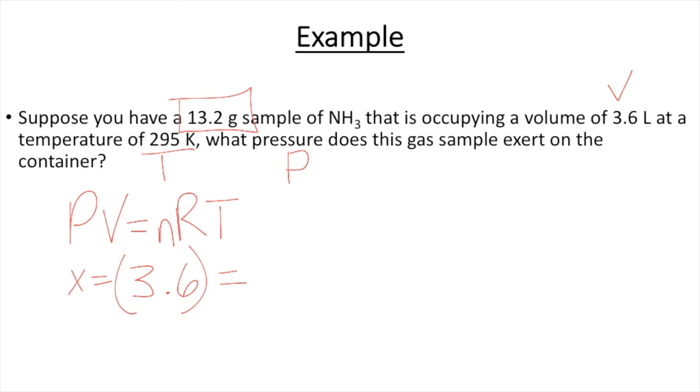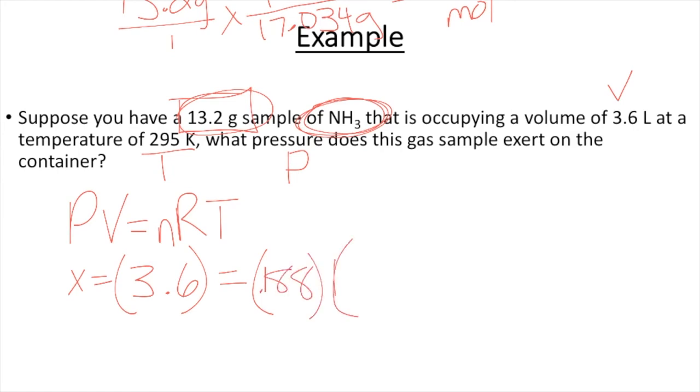Now N, my moles. I wasn't given moles. I was given grams. So I got 13.2 grams over 1. I got to get this thing to moles. The only way to get it to moles is to use the molar mass of NH3. Which, if you added it up, would be 17.034 grams in every 1 mole. Which means I have 0.188 moles in my sample. So I'm going to plug that in. So 0.188.